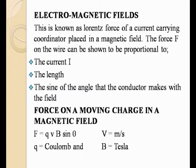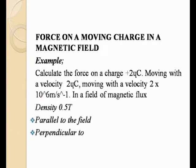Now let's look at this particular question. The example says a force F is on the charge plus 2 microcoulombs. We have a velocity of 2 times 10 to the power 6 meters per second. That's the velocity. Remember our formula is QVB. Now it has a magnetic field — that is a flux density of 0.5 Tesla. That is your B, 0.5 Tesla.